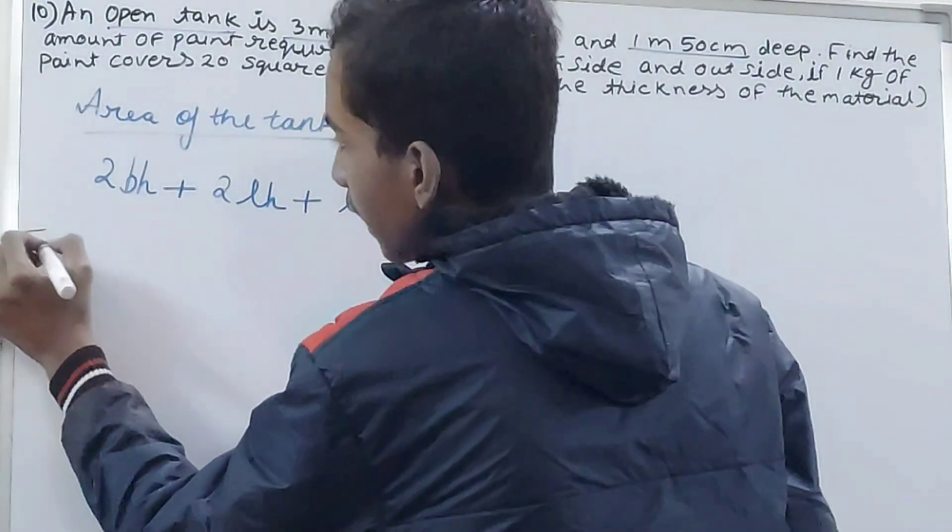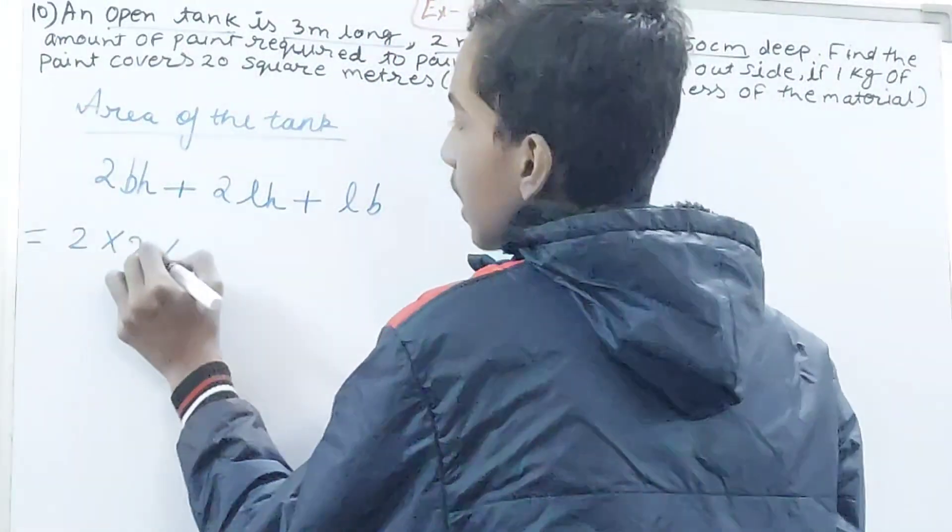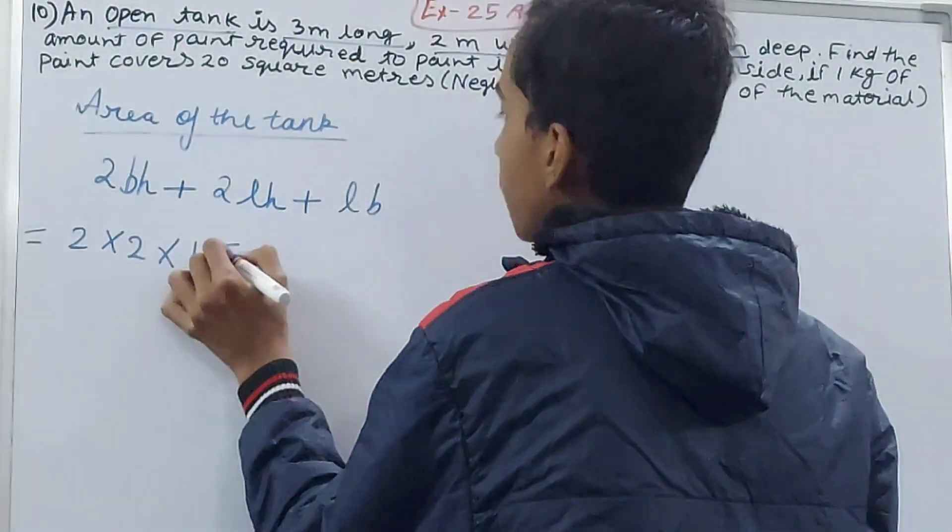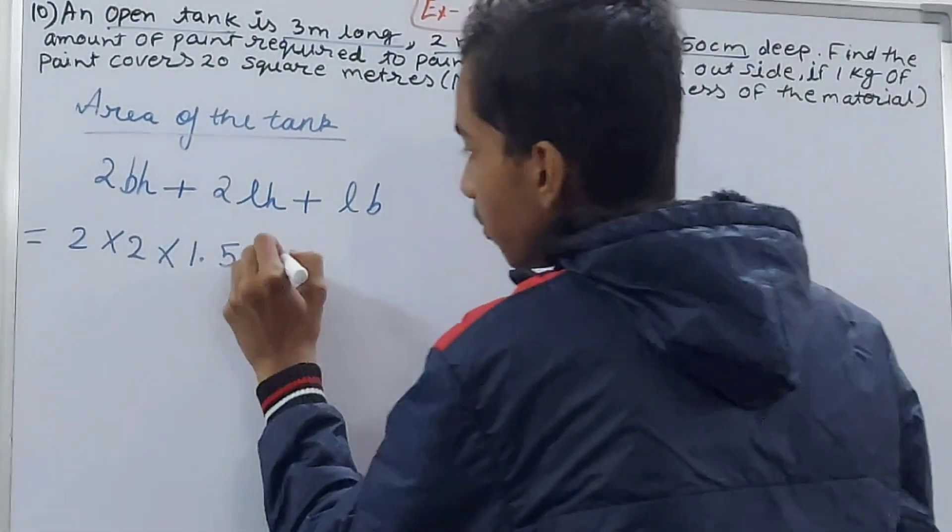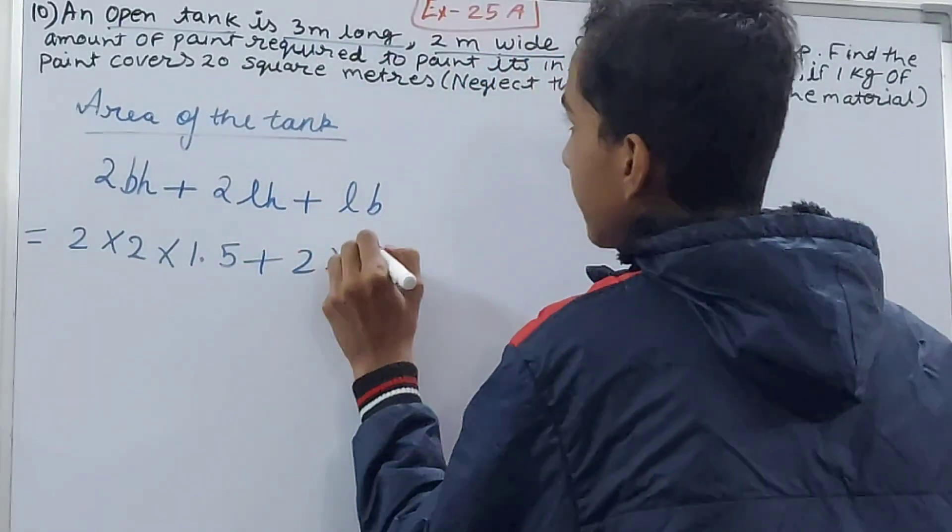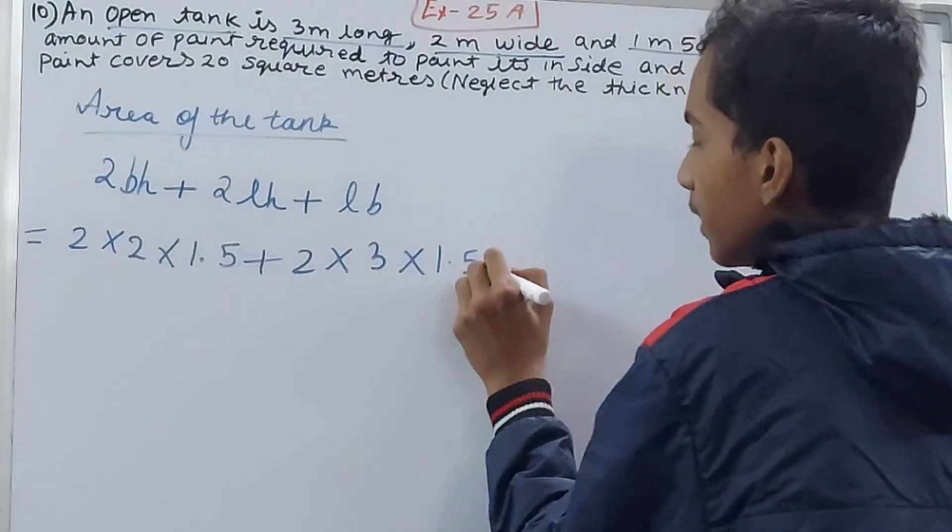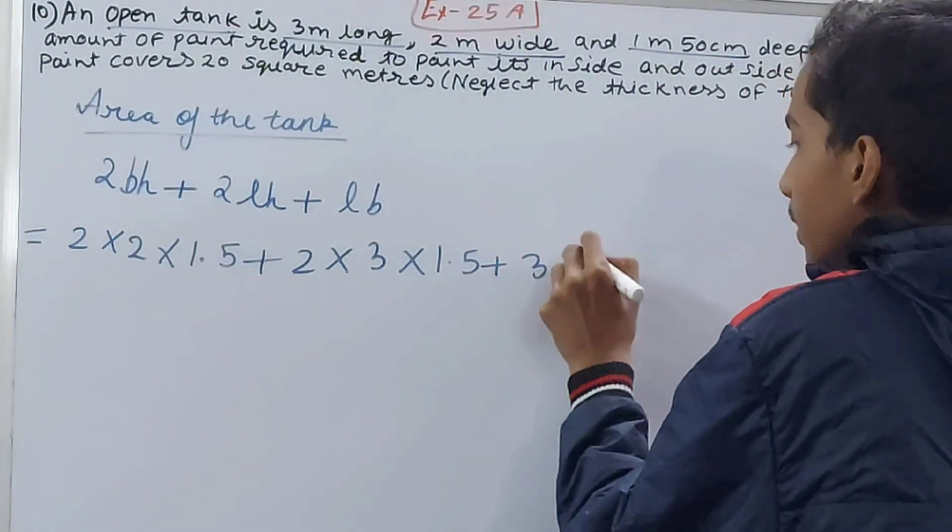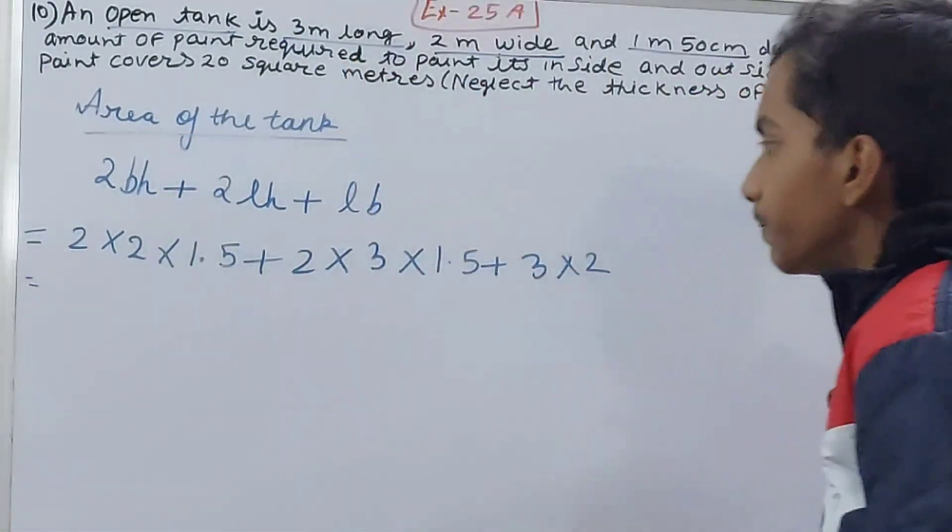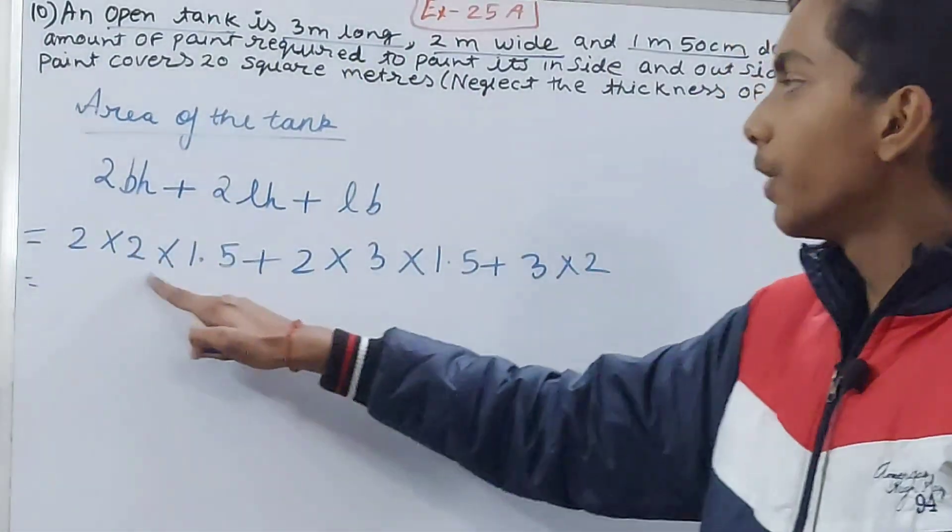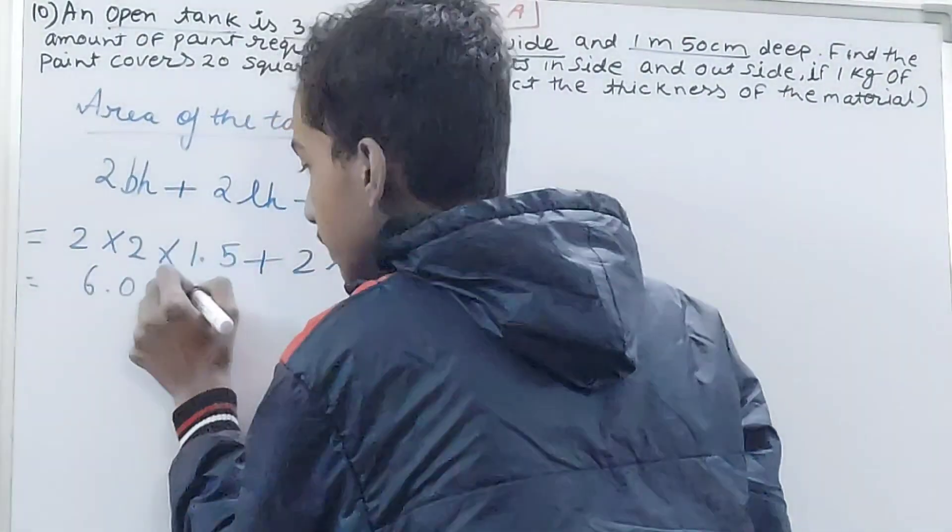Now put the values. We have 2 into - see, my breadth is 2 meters, height is 1.5 meters - this you can see, 1 meter 50 centimeters, that's 1.5 meters. And then plus 2 into length is 3 into height again 1.5, plus length into breadth, so length is 3 into 2, breadth, that is 6. So now, now just calculate this.